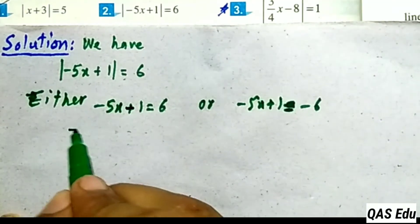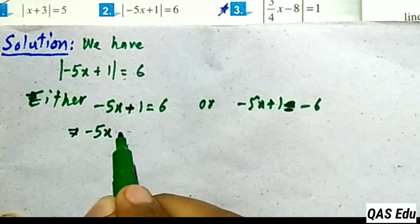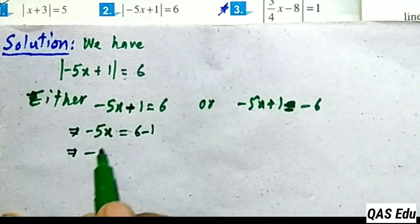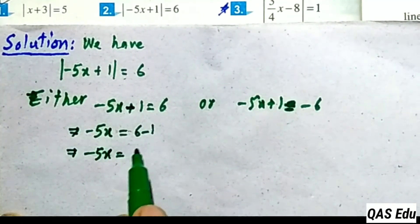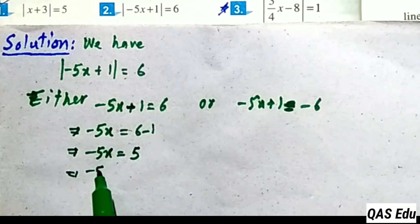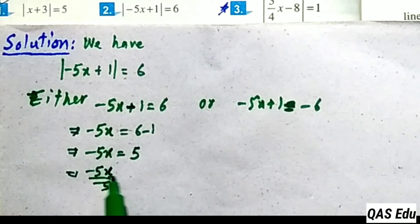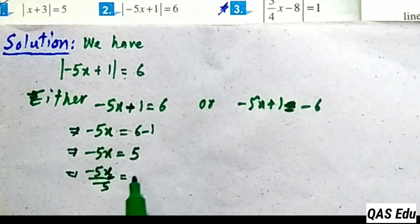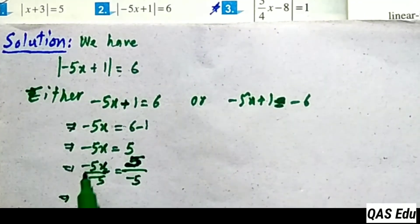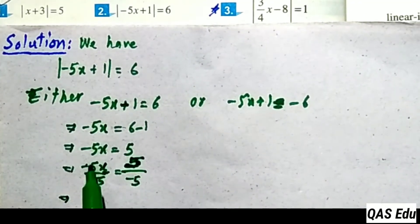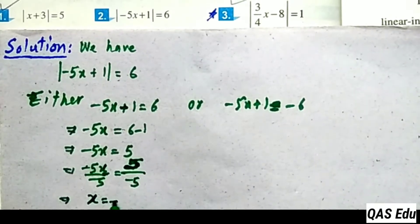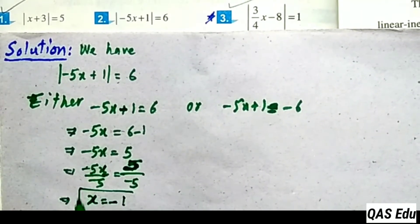Move plus 1 to the right-hand side as minus 1. So 6 minus 1 gives minus 5x equals 5. Divide both sides by minus 5. The negatives cancel and 5 cancels, leaving x. 5 divided by minus 5 equals minus 1.